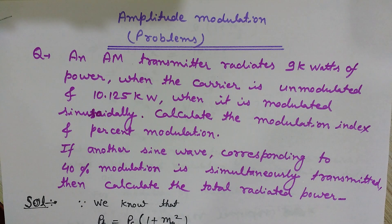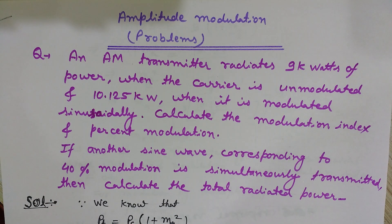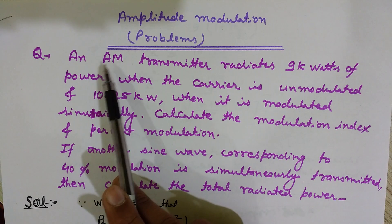In amplitude modulation, the amplitude of the carrier wave is changed according to the variations in the amplitude of the message signal. We do not transmit the modulating signal as it is. First we take a high frequency carrier wave and then change its amplitude. If it is frequency or phase modulation, then we change its frequency or phase accordingly.